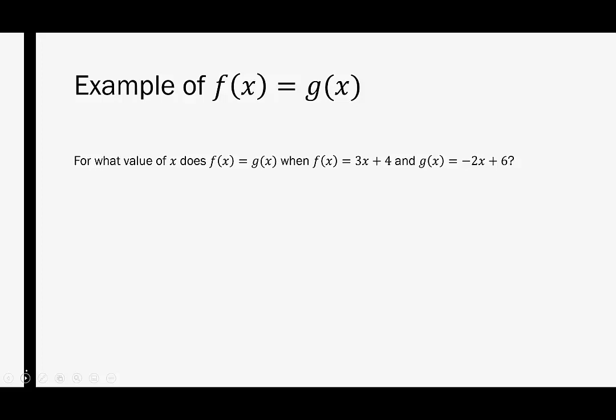So let's look at an example. For what value of x does f of x equal g of x when f of x equals 3x plus 4 and g of x equals negative 2x plus 6? You'll notice here that both f and g are linear, which means we can have at most one point of intersection. So we can only have one value that works. So if we set them equal to each other, we would say 3x plus 4 is equal to negative 2x plus 6. We're going to move all the x's to one side, so I'm going to add 2x to both sides. I'm also going to subtract 4 from both sides.